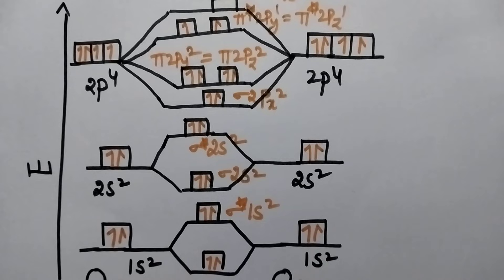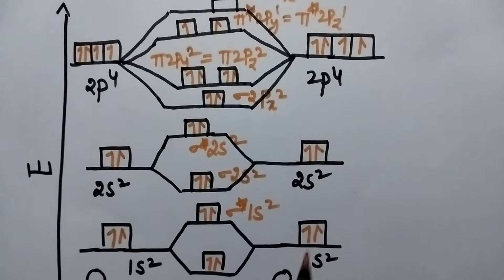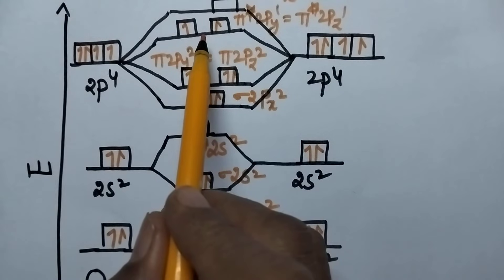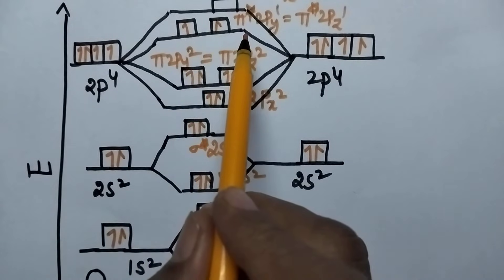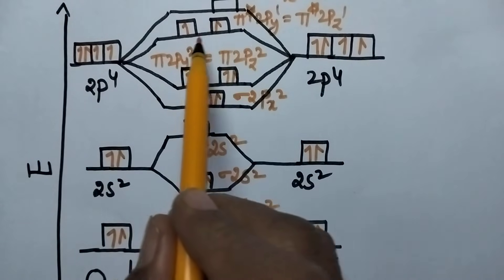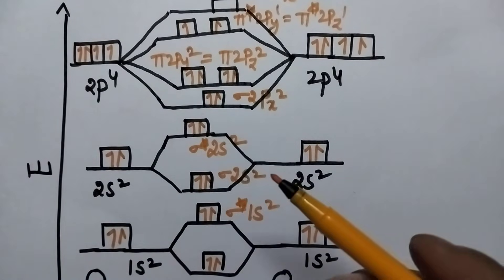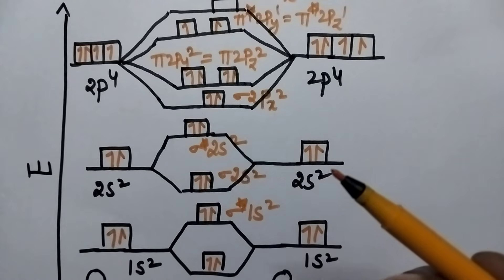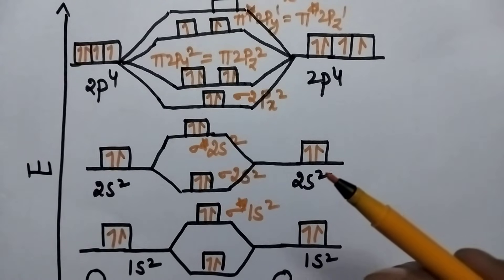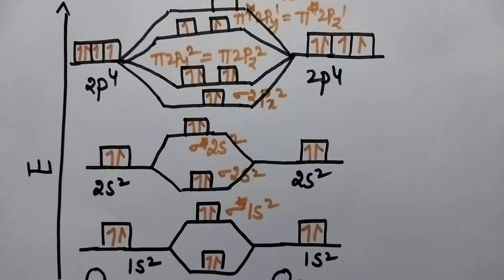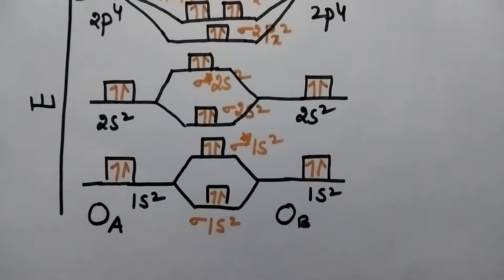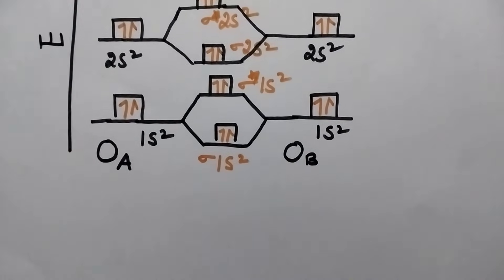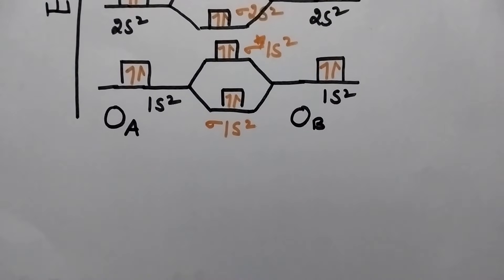This is the molecular orbital diagram of the O2 molecule. The π*2py and π*2pz consist of unpaired electrons, so this O2 molecule is paramagnetic due to the presence of unpaired electrons. Let us now see the electronic configuration of O2 along with bond order and magnetic behavior.